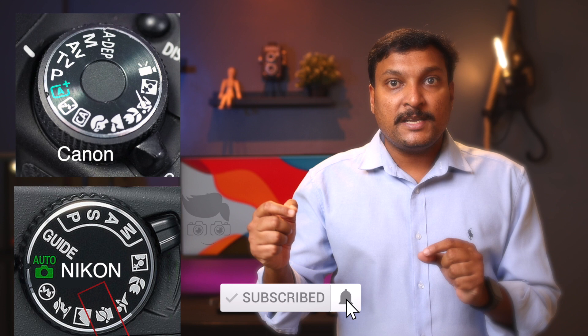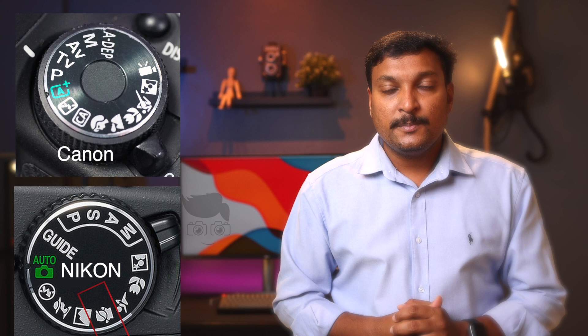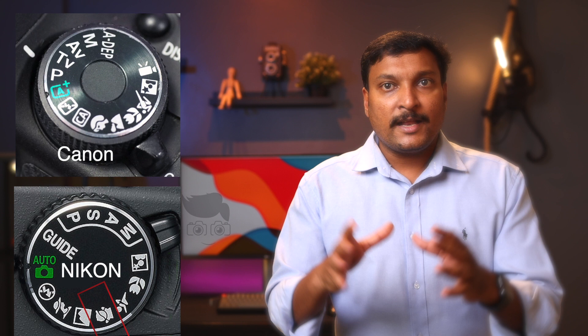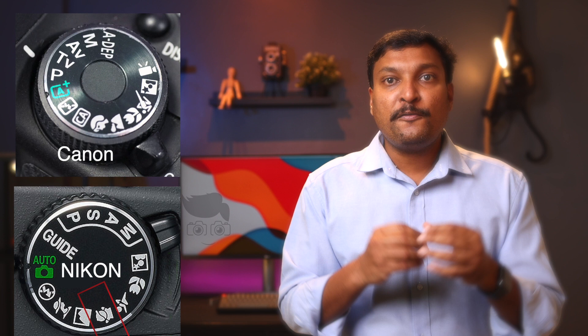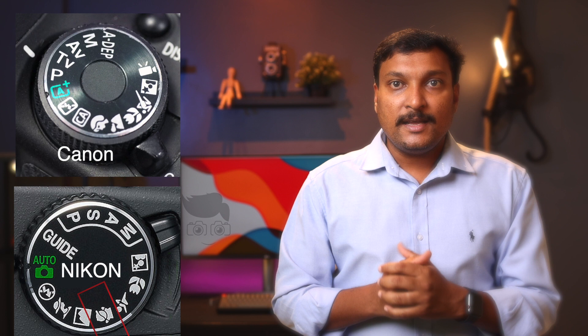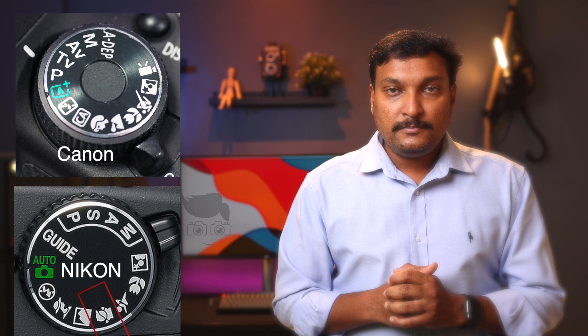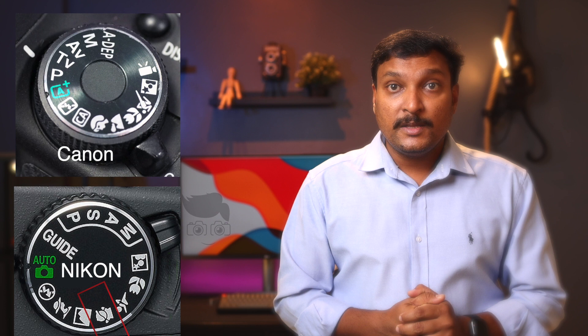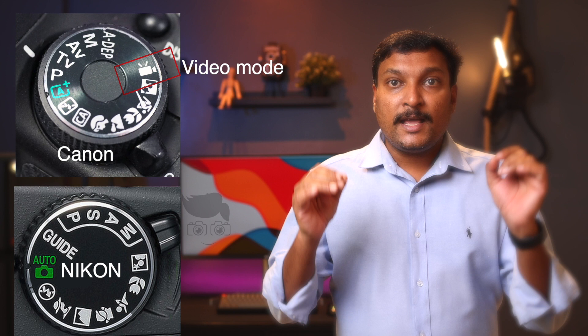There is also a child mode available on Nikon — this is not available on Canon. The child mode is designed for taking photos of kids, with soft and pleasant skin tones. The skin tone is rendered softly, making it ideal for children's portraits.